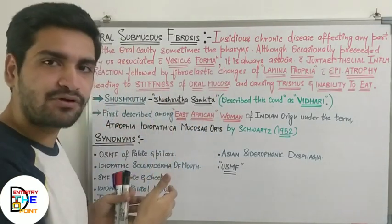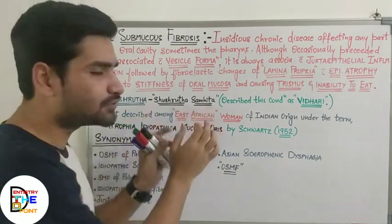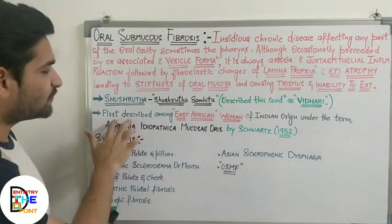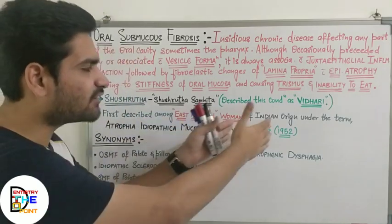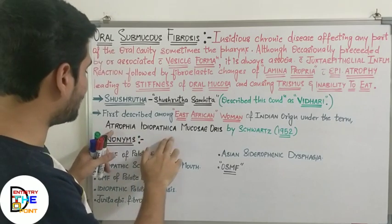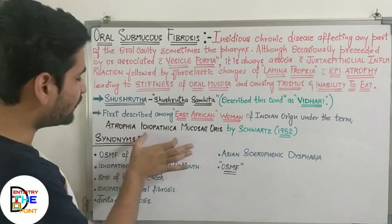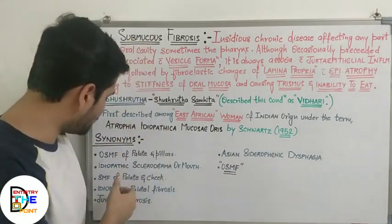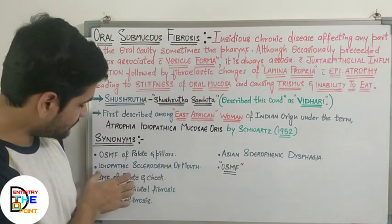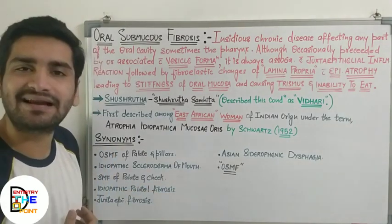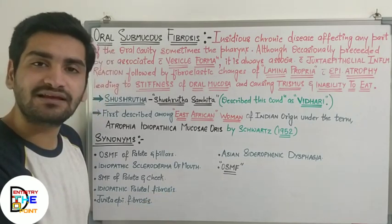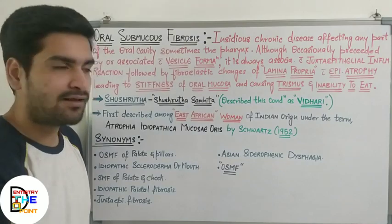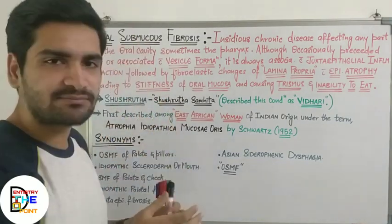Sushruta, a Greek medical practitioner, mentioned this disorder in his book and named it vidari. It was first described among East African women of Indian origin and was termed atrophia idiopathica mucosa oris by Schwartz in 1952. Various synonyms include: oral submucous fibrosis of palate and pillars, idiopathic scleroderma of mouth, submucosal fibrosis of palate and cheek, idiopathic palatal fibrosis, juxta-epithelial fibrosis, Asian sideropenic dysphagia, and finally oral submucosal fibrosis as named by Pindborg.